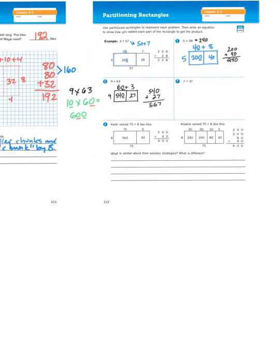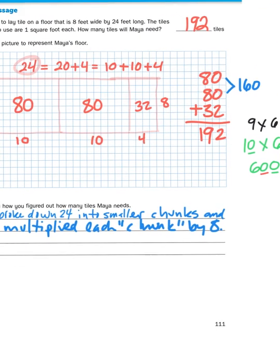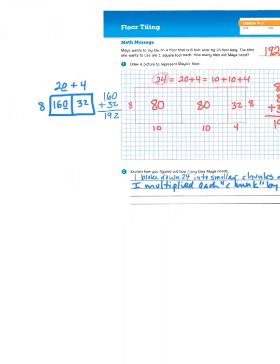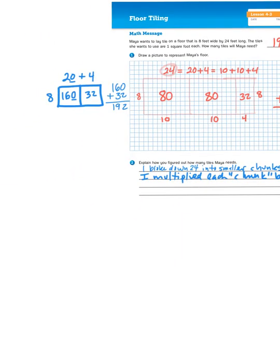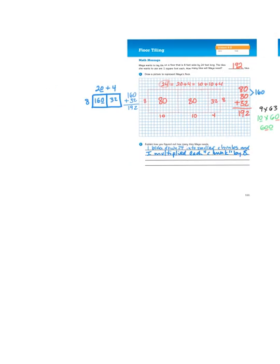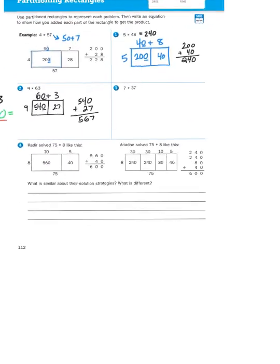So go ahead and try problem number 3 on your own, and then take a look at number 4 and see how Kadir approached the problem differently than Ariadne. They were both multiplying 75 times 8. They both took different approaches, much like I did with 24 times 8. I broke down 24 into 20 and 4, and then I also broke down 24 into 10 plus 10 plus 4. It's a brave new world. Multi-digit multiplication.